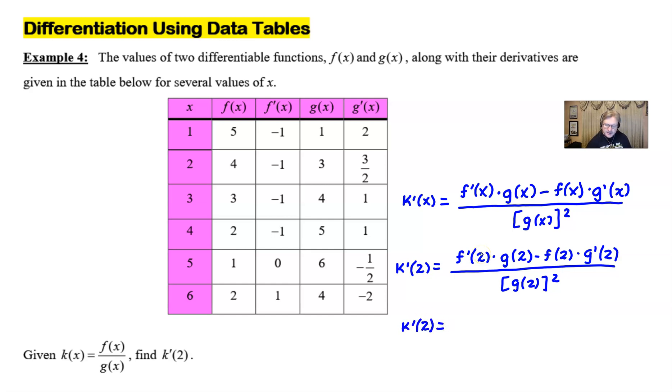For instance, f'(2). That means we're going to look into the f' column when the x is 2, and we cross-reference those columns and row values, and we get -1 right there. g(2) is going to be in the g column, of course, at the value of 3.